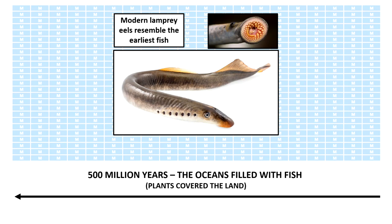Lampreys haven't really changed that much in 500 million years, so they give us a glimpse into what some of the most primitive fish looked like: eyes and brain on one end, head on one end, tail on the other, digestive system running through the middle, bones on the inside. Primitive fish didn't have limbs or jaws — those things evolved later. But we can see this shared ancestry because of these shared features.